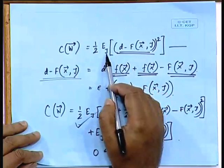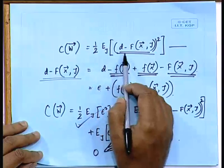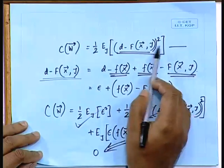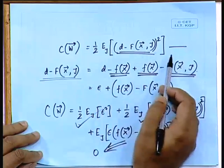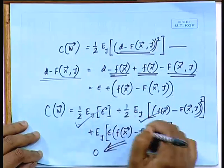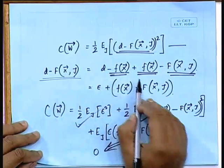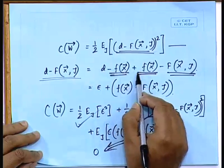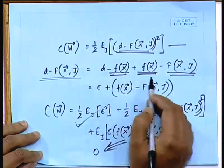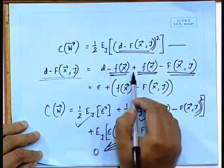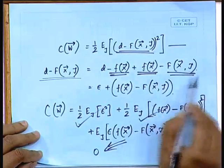Starting with the definition of the cost function, where we take it as the expectation over the set of target patterns of (d minus f(x, τ)) squared — that is, expectation of this squared quantity over training samples. For ease of expressibility, we broke up the d minus f term by introducing minus f(x) in the linear regression function form, which we subtracted and then added, to separate d minus f(x) and f(x) minus f(x, τ) as separate entities.